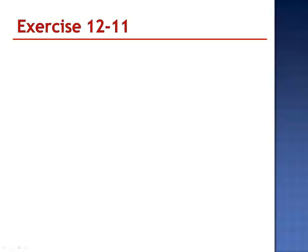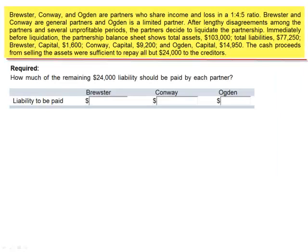Exercise 11. Brewster, Conway, and Ogden are partners who share income and loss in a 1 to 4 to 5 ratio. Brewster and Conway are general partners and Ogden is a limited partner.